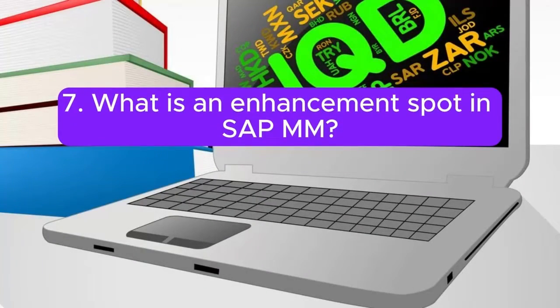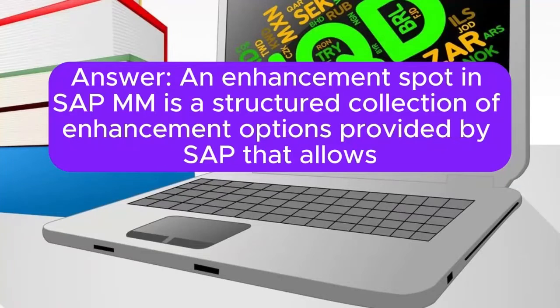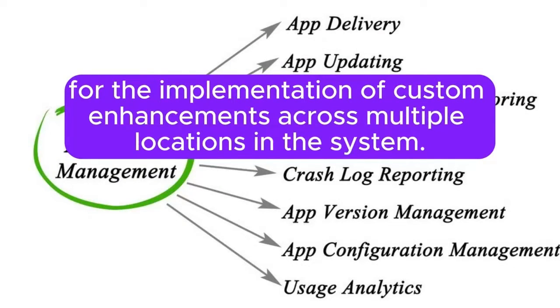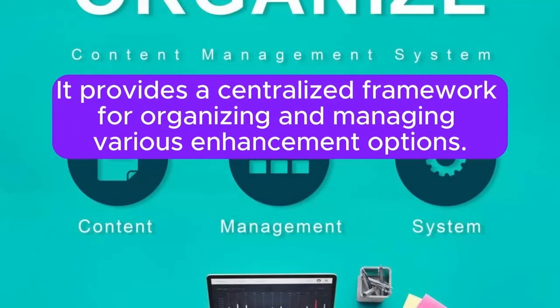What is an enhancement spot in SAP MM? An enhancement spot in SAP MM is a structured collection of enhancement options provided by SAP that allows for the implementation of custom enhancements across multiple locations in the system. It provides a centralized framework for organizing and managing various enhancement options.